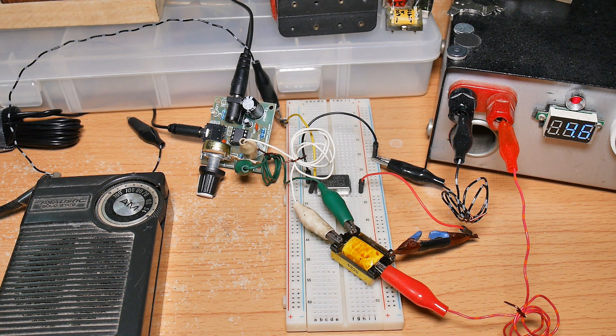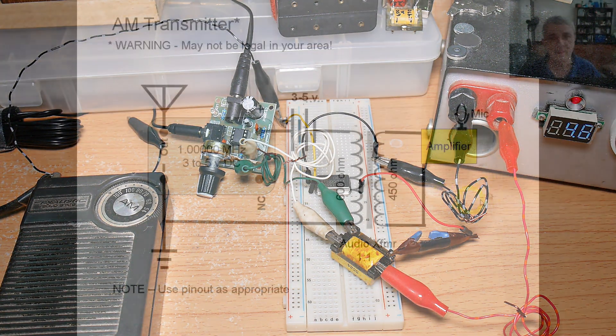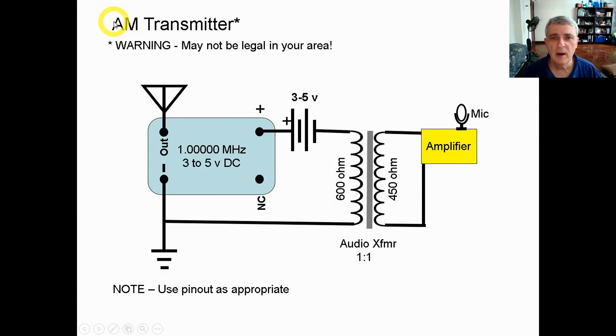Today let's build an AM radio transmitter. Let's talk about our AM transmitter. This is the circuit diagram for it. First of all, there's a warning - you need to check your local regulations to make sure this is legal.